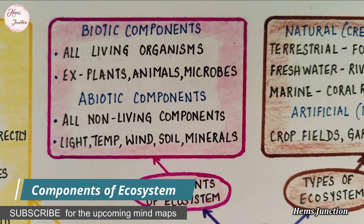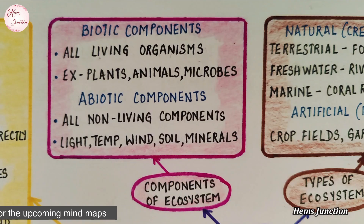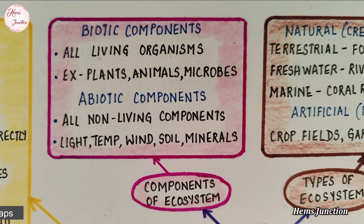Biotic components include all the living organisms in an ecosystem, like plants, animals, and microorganisms. Abiotic components are all the non-living components on which an organism depends, like temperature, rainfall, wind, soil, and minerals.